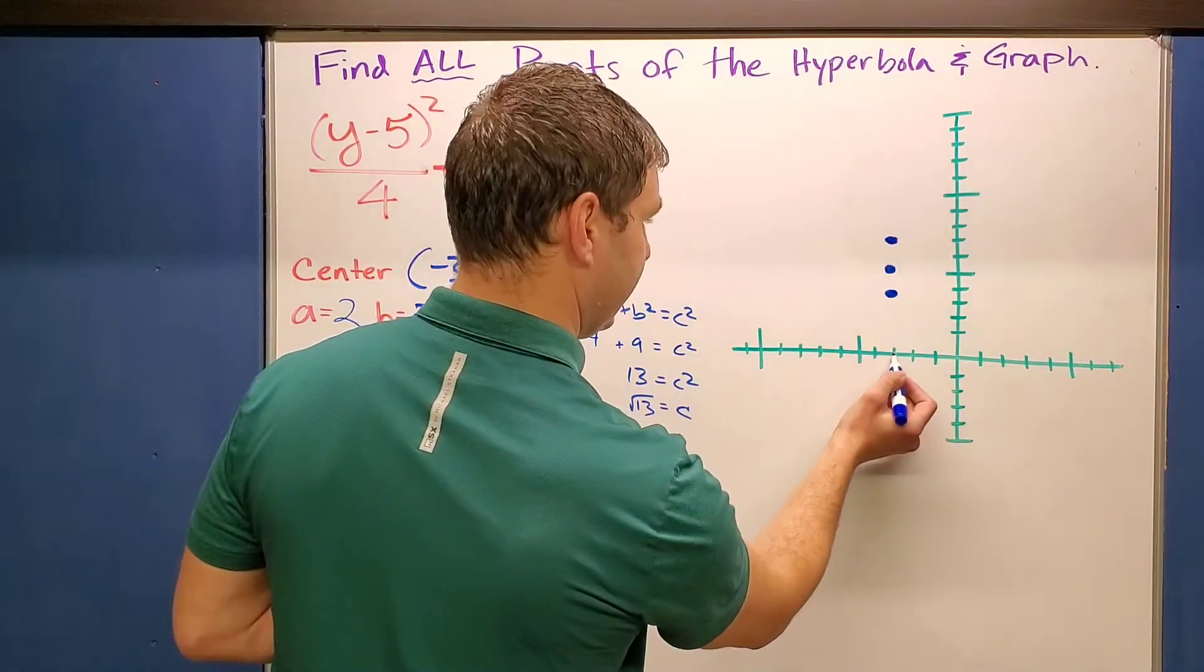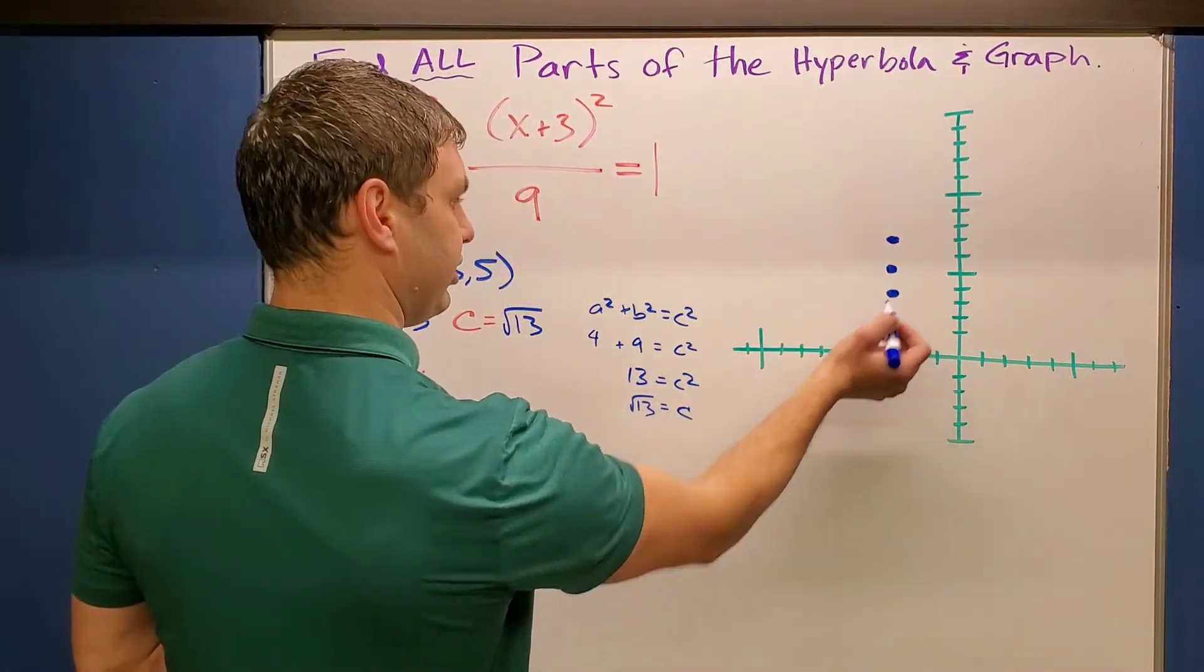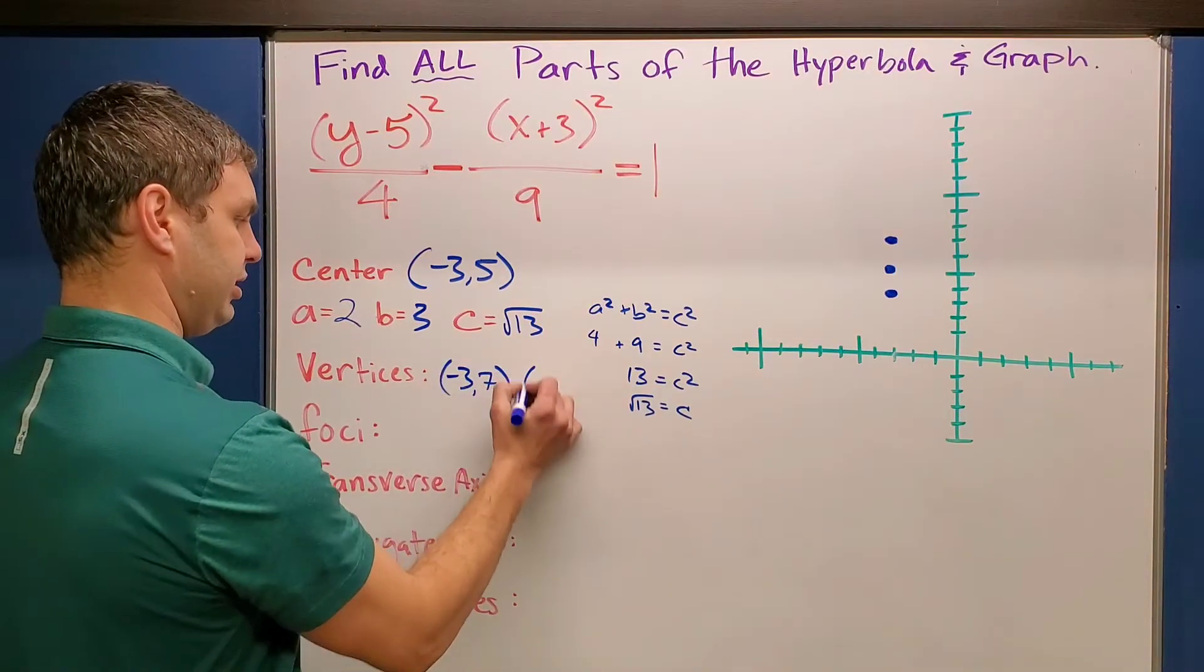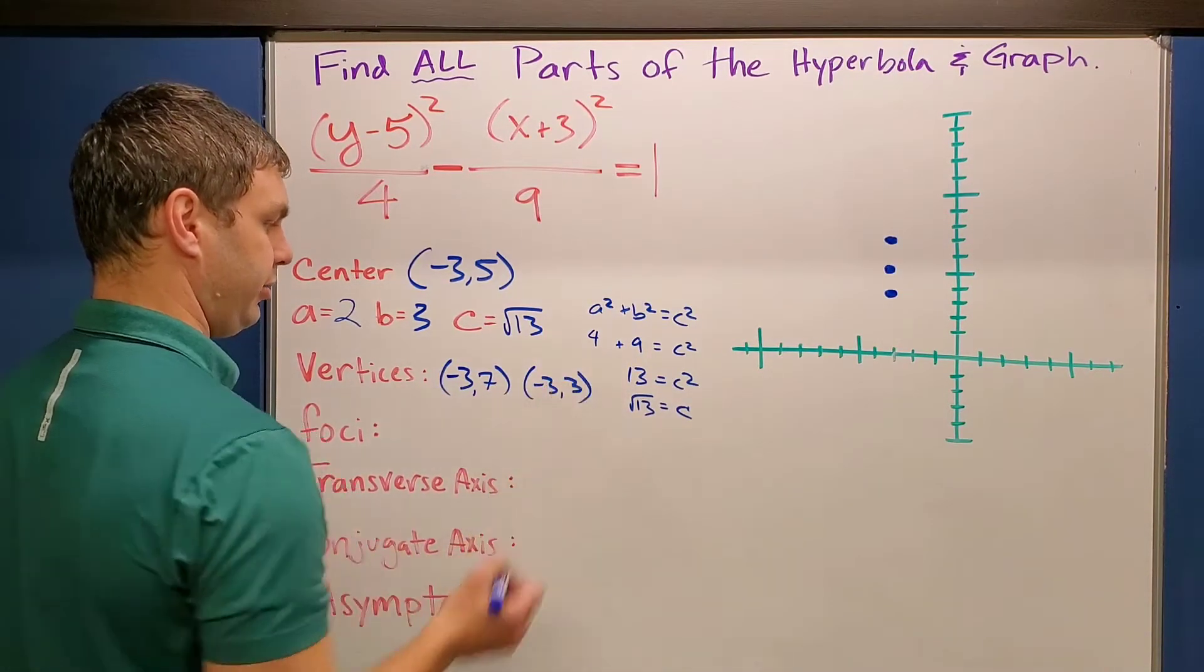In this case, this is a negative three, let's see, seven and negative three, three. Negative three, seven is one vertex. The other one, negative three, three.